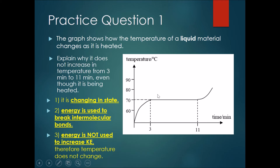You should follow a simple step-by-step way to answer this kind of question, as it occurs very often. The first point you should say is that it is changing state. If you say it is changing state, this means that it cannot change in temperature — that explains the horizontal line.